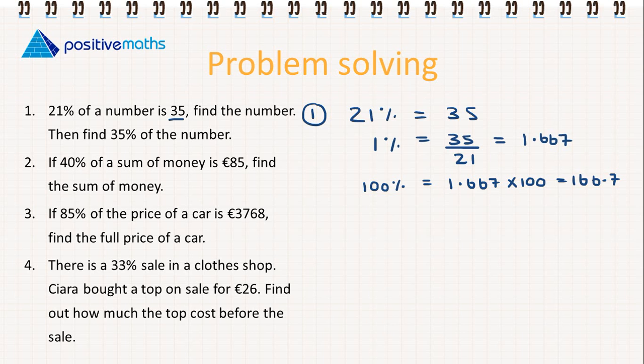We then need to find 35% of the number. If we're looking for 35%, then it's going to be our 1%, which is 1.667 multiplied by 35, which will give us 58.333. Again, that's rounded to three places.